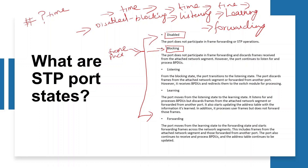For blocking, you will have a certain transition. For blocking, you will discard the frames from attached network segments. You will receive the BPDU and redirect to the switch module for processing. Now, BPDU will be received. If you have any frames, you will drop them.